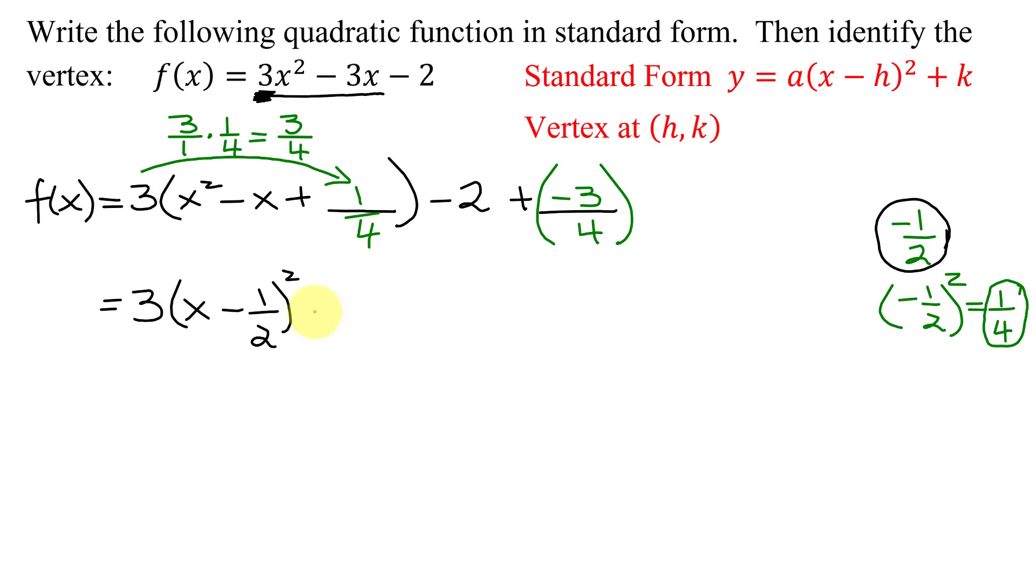My common denominator is going to be 4, so I'm going to multiply the 2 by 4/4. And then I'm going to get -3/4. So I get 3(x - 1/2)² - 2 times 4 is 8/4 minus 3/4.